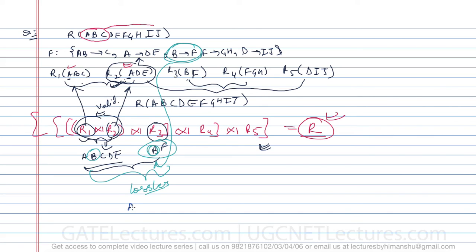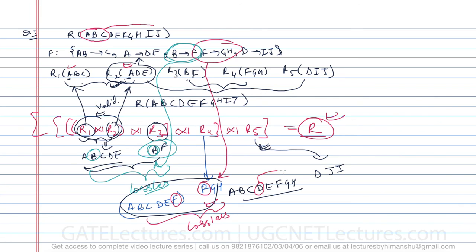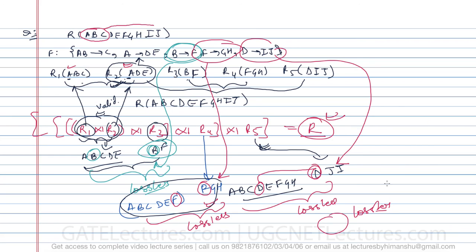R4(F,G,H) shares F with the running join result (A,B,C,D,E,F). F is a key attribute in R4 from the functional dependency F→GH, so this decomposition is lossless. The combined attributes become A,B,C,D,E,F,G,H. R5(D,I,J) shares D, and D is a key attribute in R5 from D→IJ, so the full decomposition is lossless.